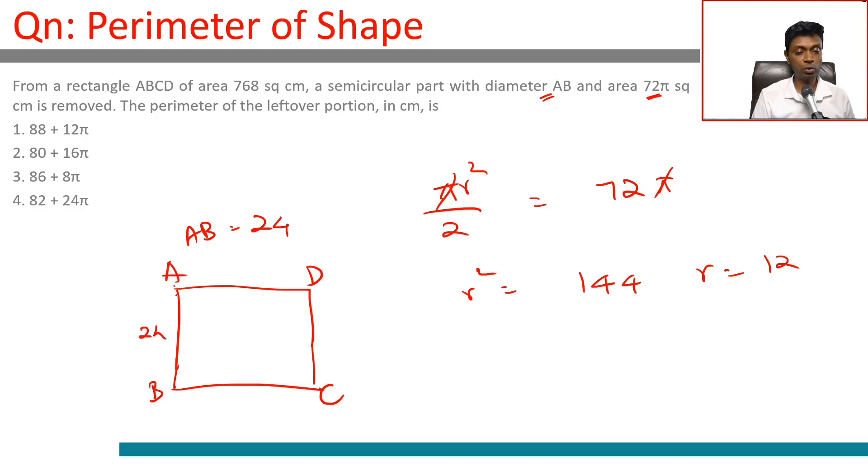AB measures 24, with the semicircle cut off. Since the rectangle's area is 768, we have AB × BC = 768, so 24 × BC = 768.